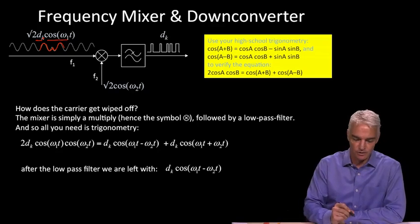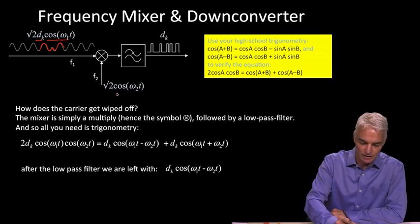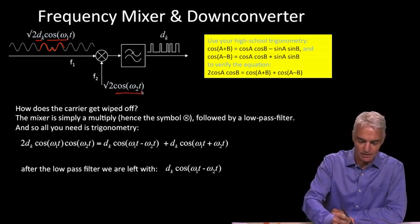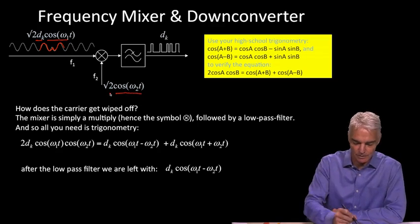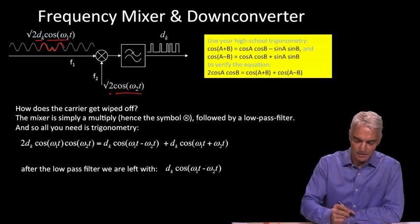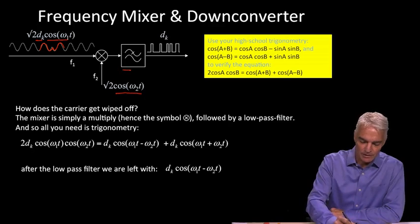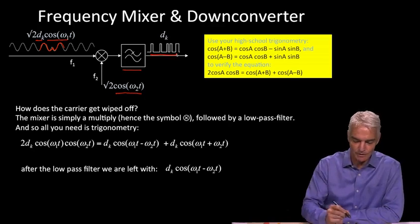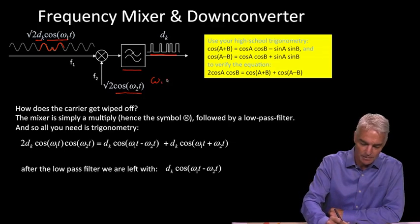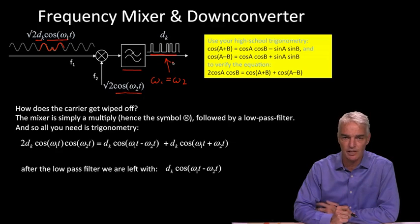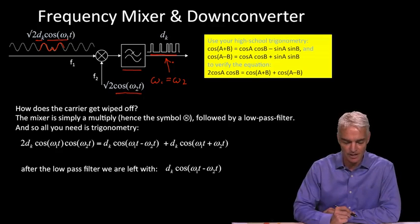That's the signal coming in to this mixer. Then we generate a sinusoid of also root-2 amplitude and multiply those two together, pass through a low-pass filter. We say that at the end of that, if omega-1 exactly matches omega-2, we're going to end up with just the digital signal — just that code, the sequence of plus or minus ones that we started with up at the satellite. So how does this happen?